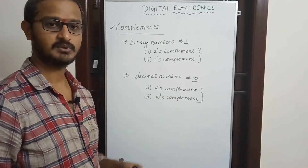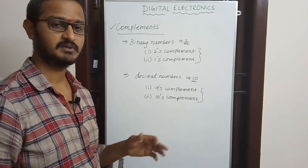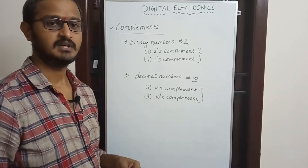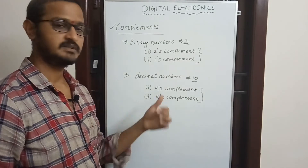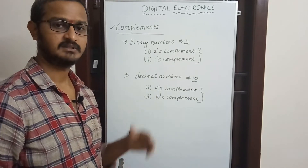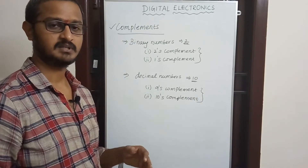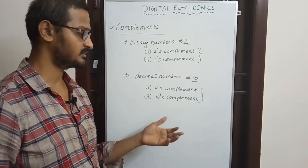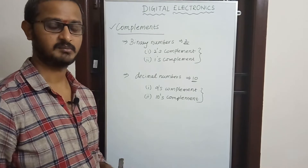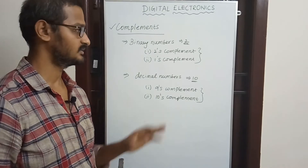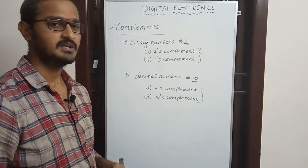For decimal numbers, the 9's complement is found by subtracting each digit from 9. If you add 1 to the 9's complement, it becomes the 10's complement. It is very easy.